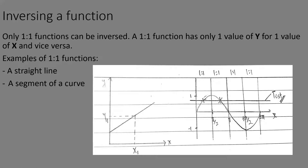Not all functions can be inversed — only one-to-one functions can. A one-to-one function has only one y value for one value of x. Examples include a straight line or a segment of a curve. For example, the sine curve from zero to pi over two is one-to-one, but from zero to pi it fails the horizontal line test — one y value maps to two x values — so it cannot be inversed over that interval.